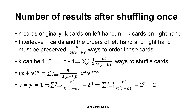Consider the general case when there are N cards. The cards are divided into K cards on the left hand and N minus K cards on the right hand. The orders on both hands must be preserved, so the number of possible orderings is N factorial divided by the product of K factorial and (N minus K) factorial. The value of K can be 1, 2, 3, up to N minus 1, and the number of outputs using riffle shuffling is the sum over all those values of K.